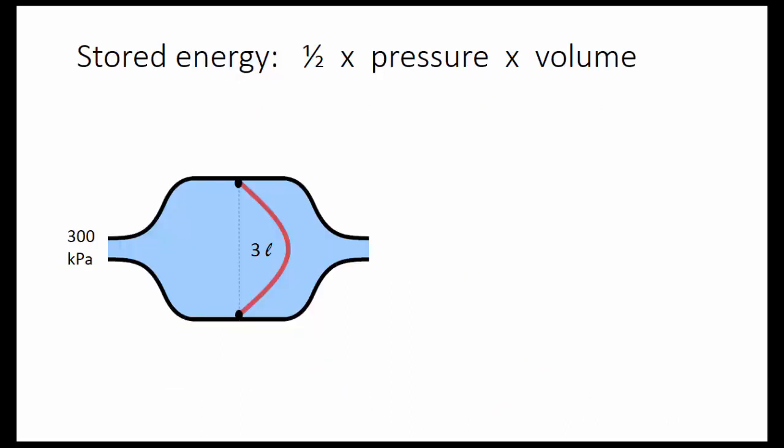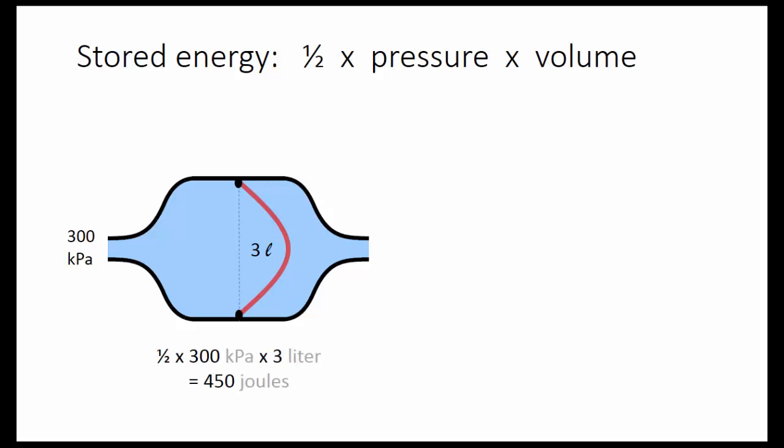The stored energy is one-half the pressure times the volume for the hydraulic capacitor, and one-half times voltage times charge for the electronic capacitor. Why only one-half the pressure times the volume here? Because the pressure was ramped up from 0 to 300 to push in this 3 liters.